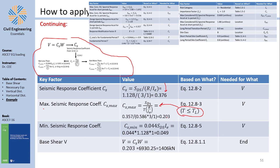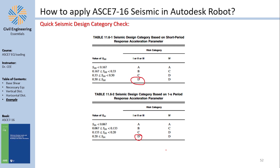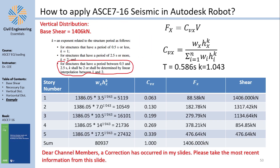However, Cs is limited by a maximum and a minimum. The maximum limit is Equation 12.8-3 since T < TL, and this maximum governs. The minimum is from Equation 12.8-5, but since the maximum already governs the minimum doesn't control — still good to verify. The base shear is V = Cs × W = 1406 kN. This is the force attacking the structure at the base. One important check: can we even use the equivalent lateral force method? Yes — the seismic design category is D, but the building is 48.8 m or less in height and has no irregularities.